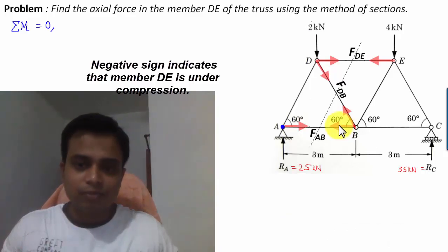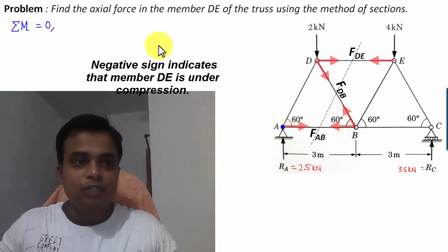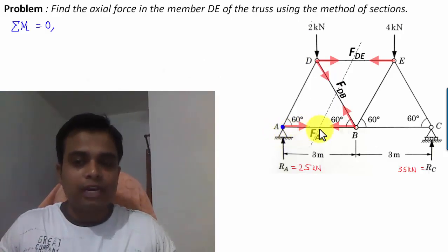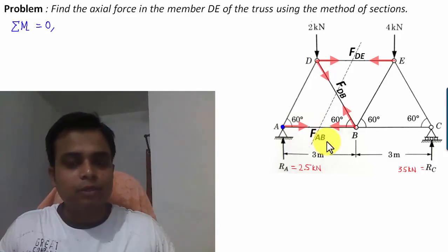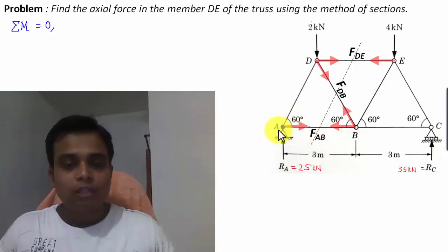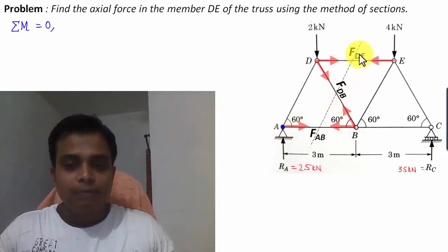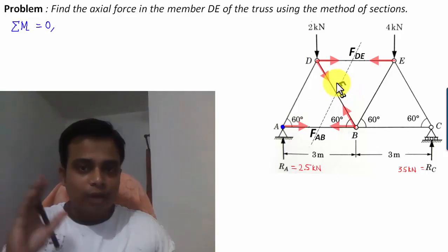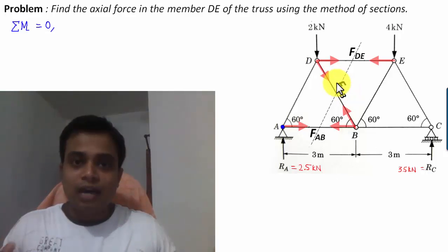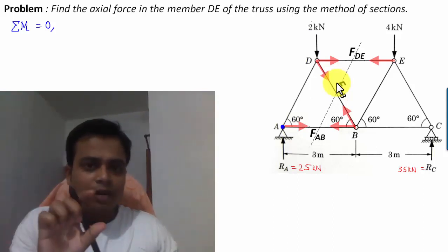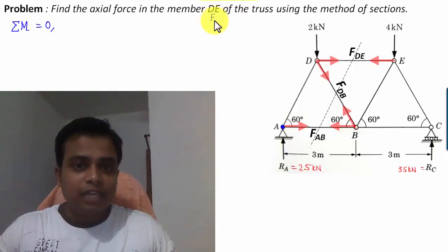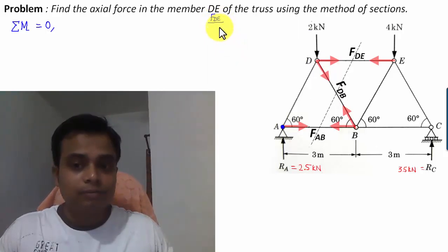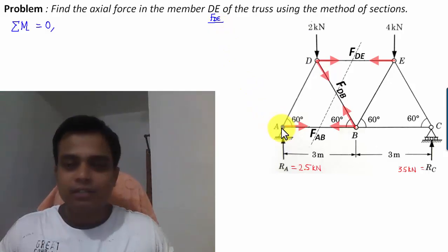If we select point A, force F_AB passes through A so its moment is zero. But F_DB and F_DE both remain, giving one equation with two unknowns — absolutely undesirable. We want one equation with only one unknown, ideally F_DE. So taking the moment about point A is not really an option.